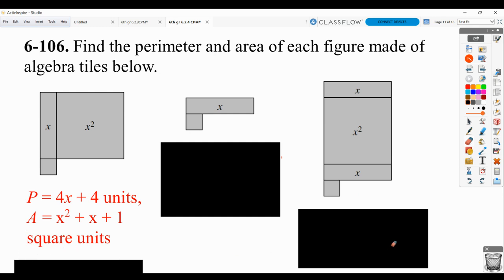For the perimeter, this would be where you may want to draw this on your notebook or use the e-tools. But you're going to mark the lengths that have a value of x. So that's 1, that's 1, this has a value of x, this has a value of x. And then you're going to mark the ones that have a length of 1. So here, here, here, and here.